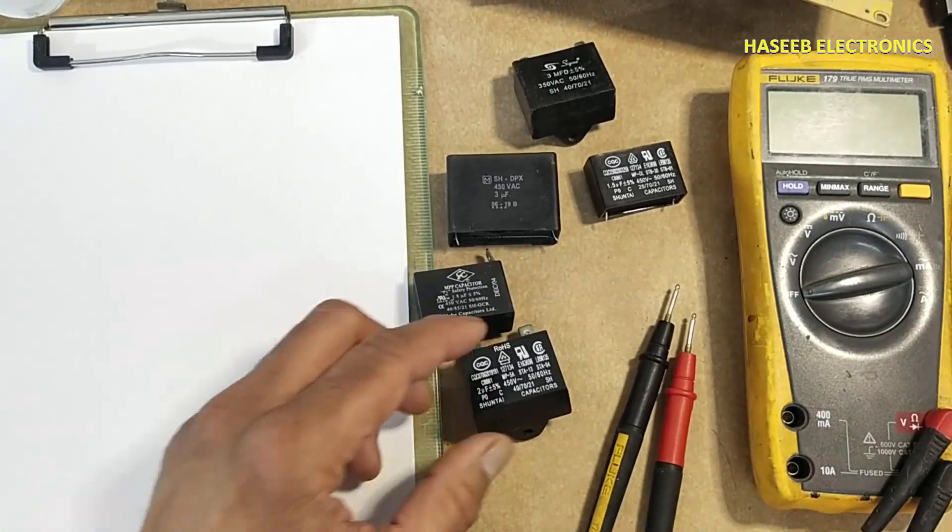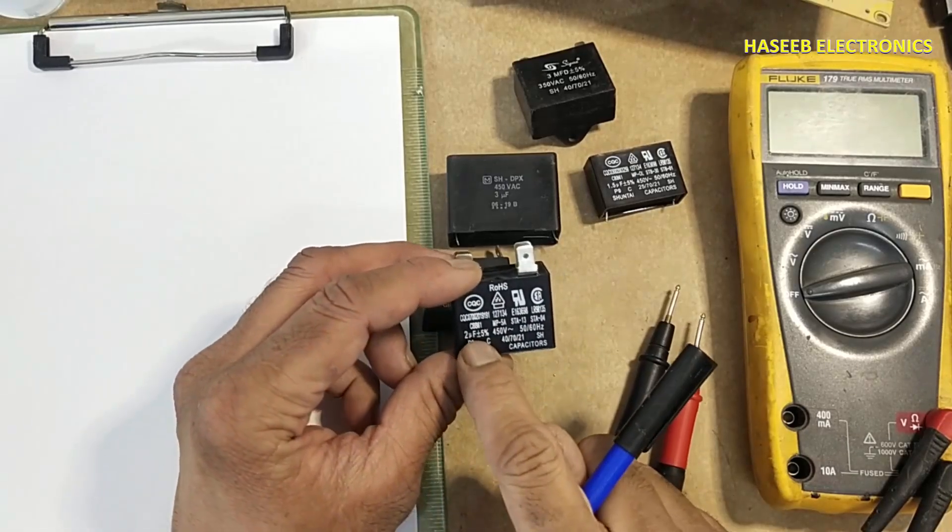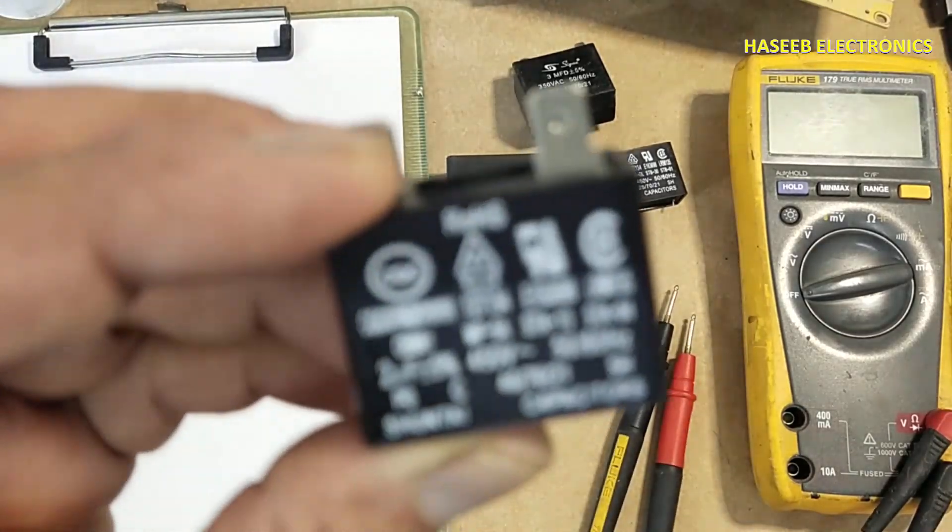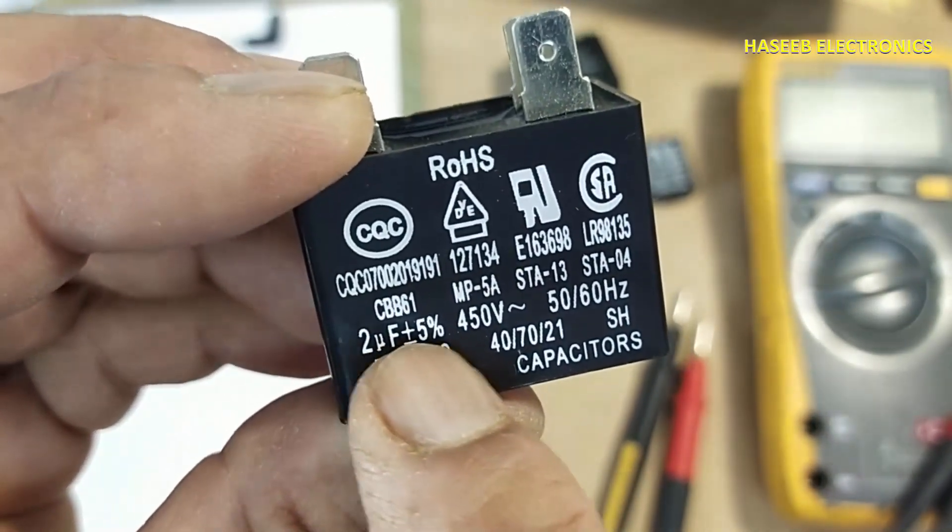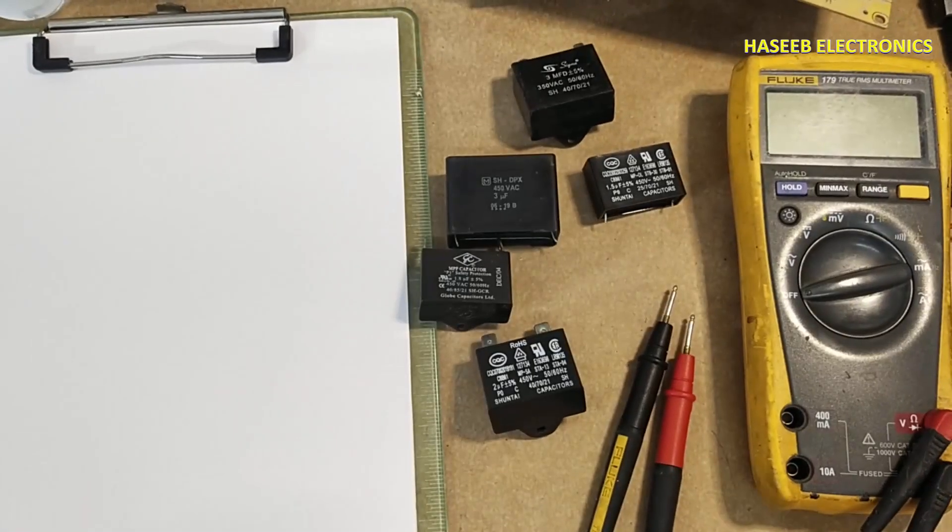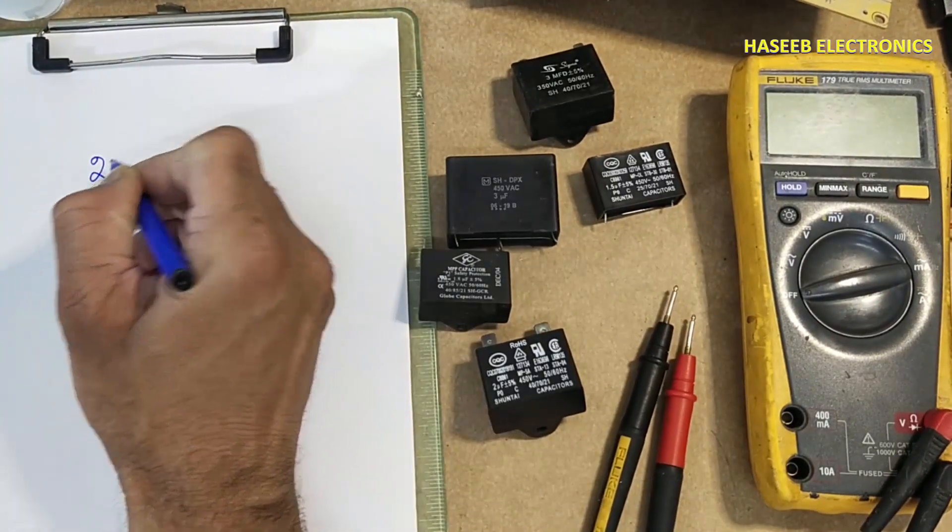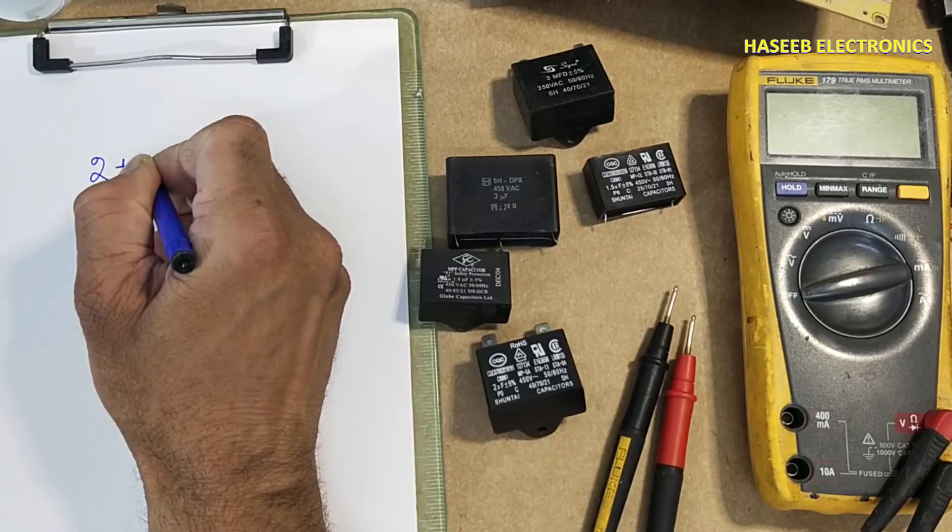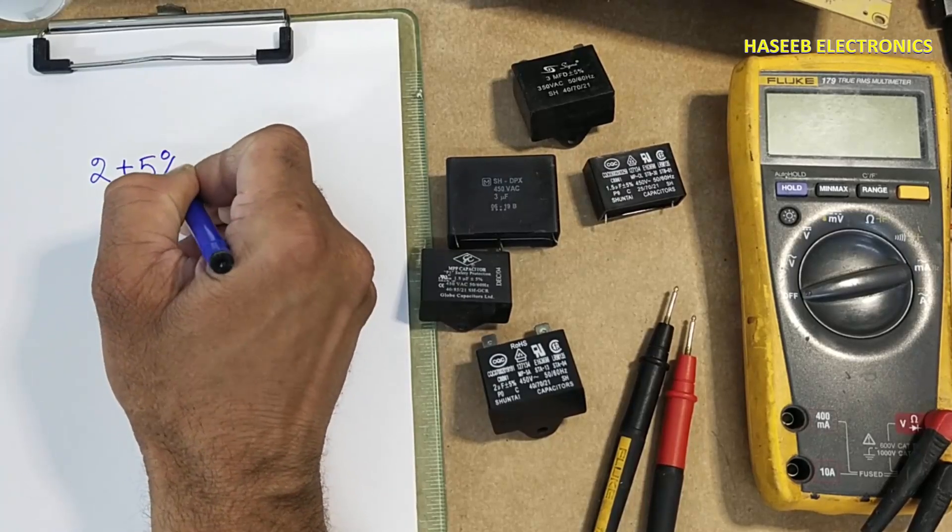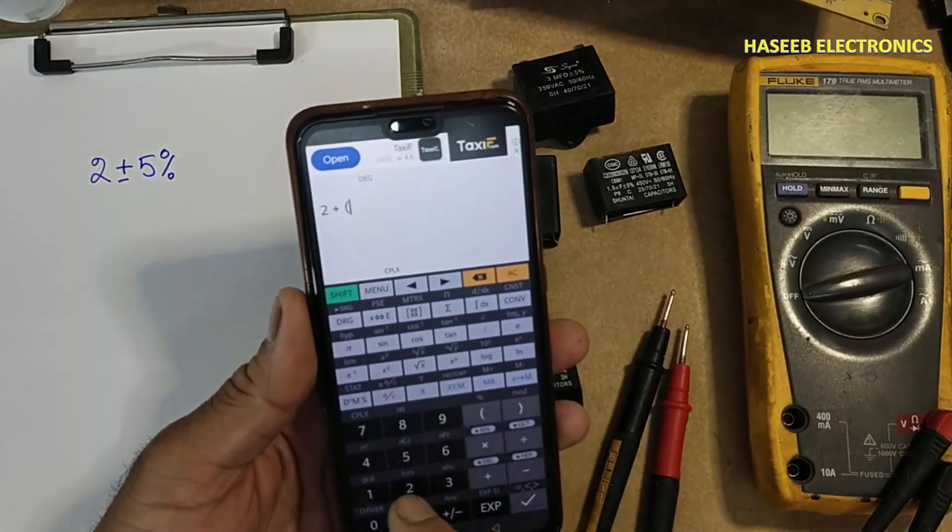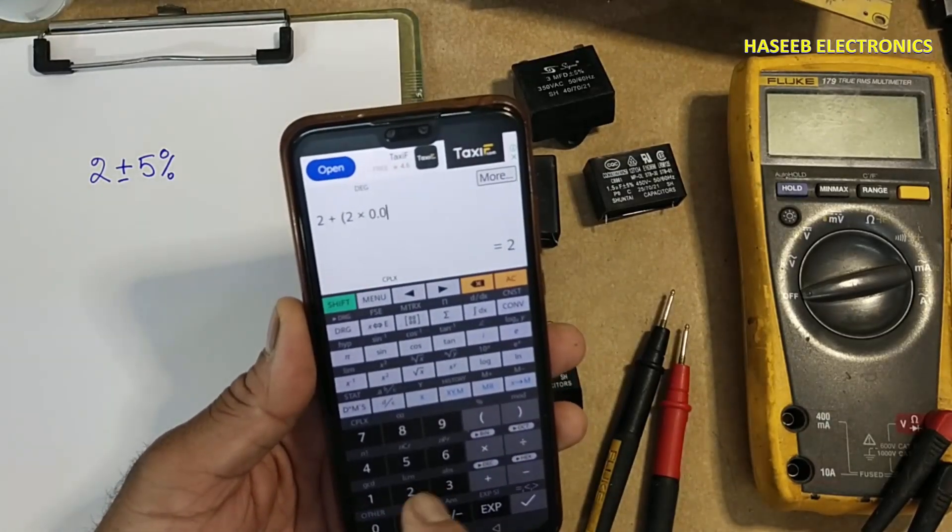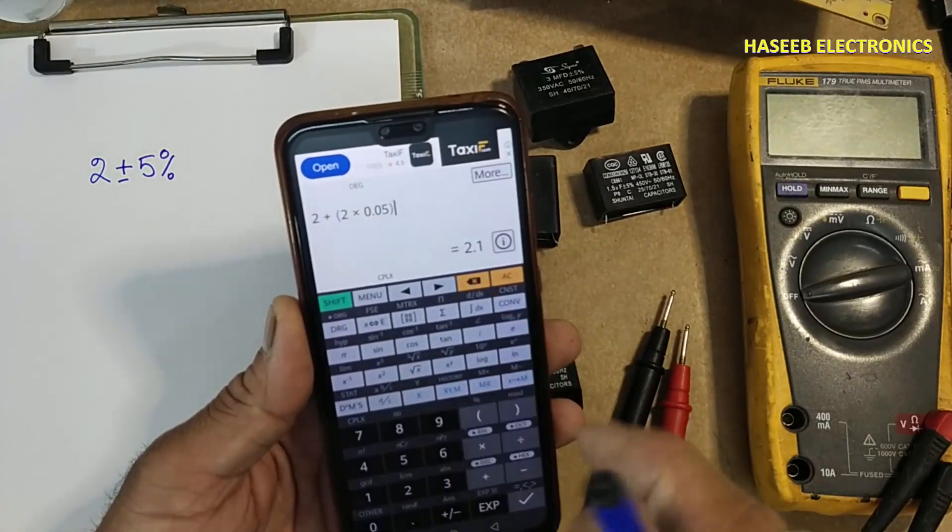In the first step, we will see the value mentioned on the body. That is 2 microfarad plus minus 5 percent, the capacitance and tolerance. Capacitance value 2 microfarad plus minus 5 percent. Two plus two multiplied by 0.05, this is the upper limit: 2.1 microfarad.